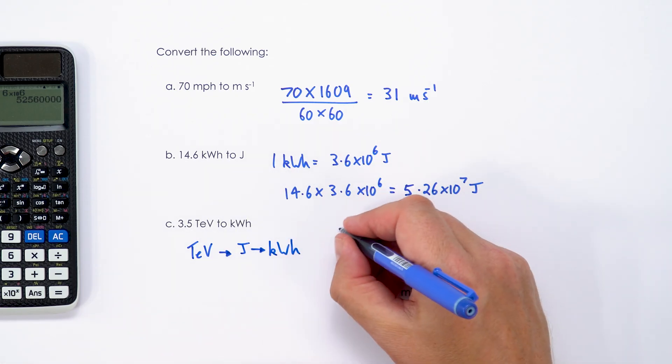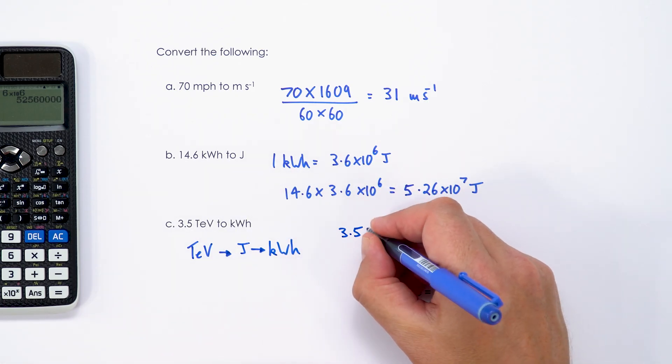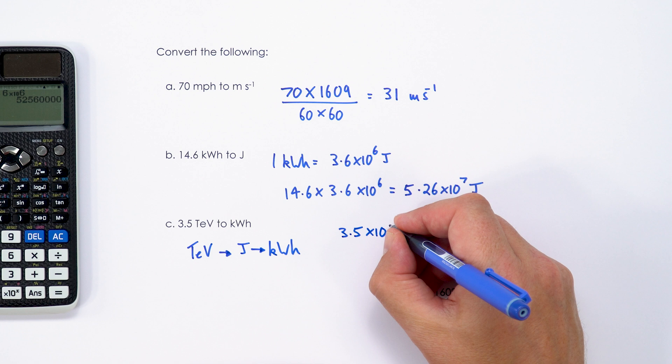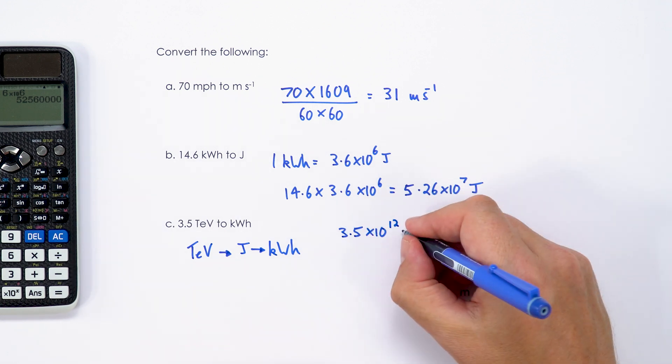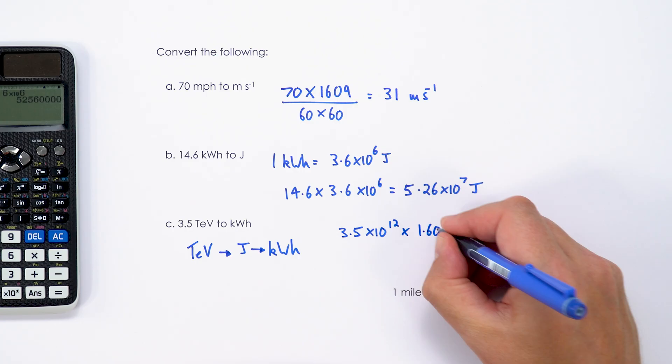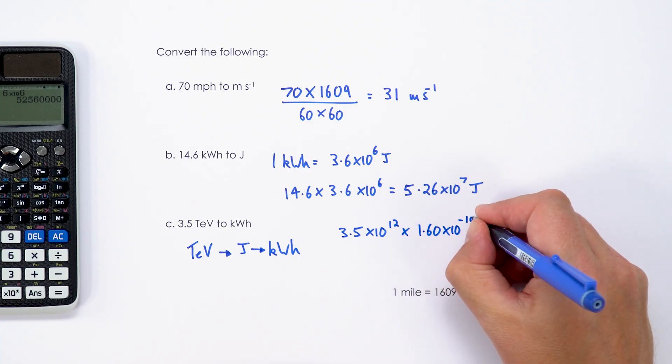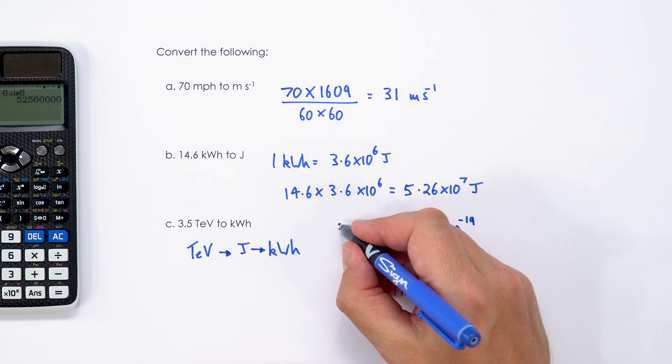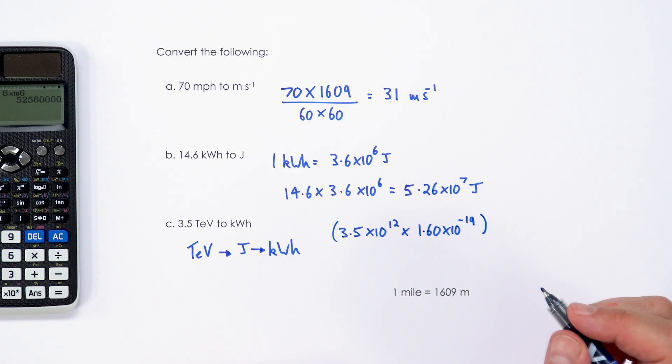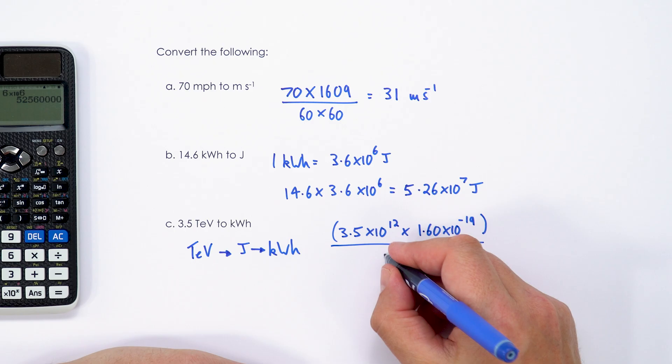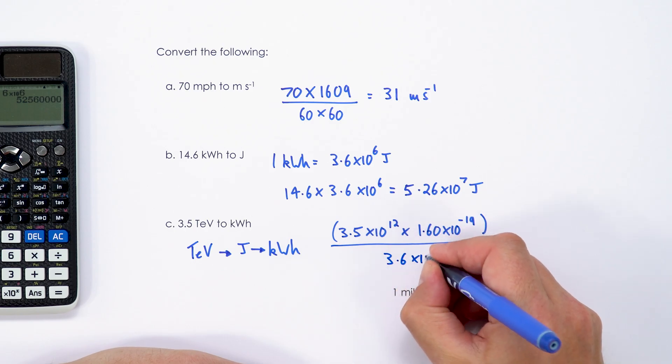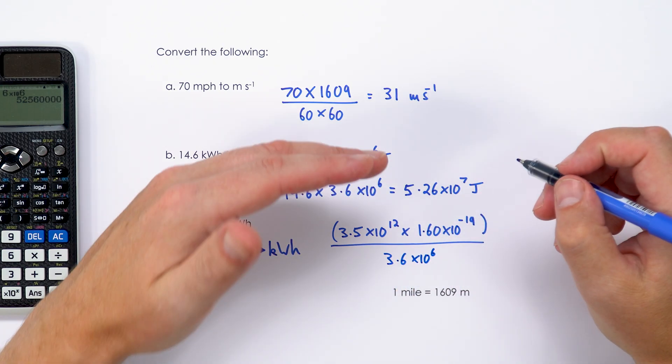So if we've got 3.5, that's 3.5 times 10 to the 12 electron volts. We're going to multiply that by 1.60 times 10 to the minus 19 to convert this whole answer into joules. But as we go from joules to kilowatt hours, we're then going to divide by 3.6 times 10 to the 6 as we go from joules to kilowatt hours.